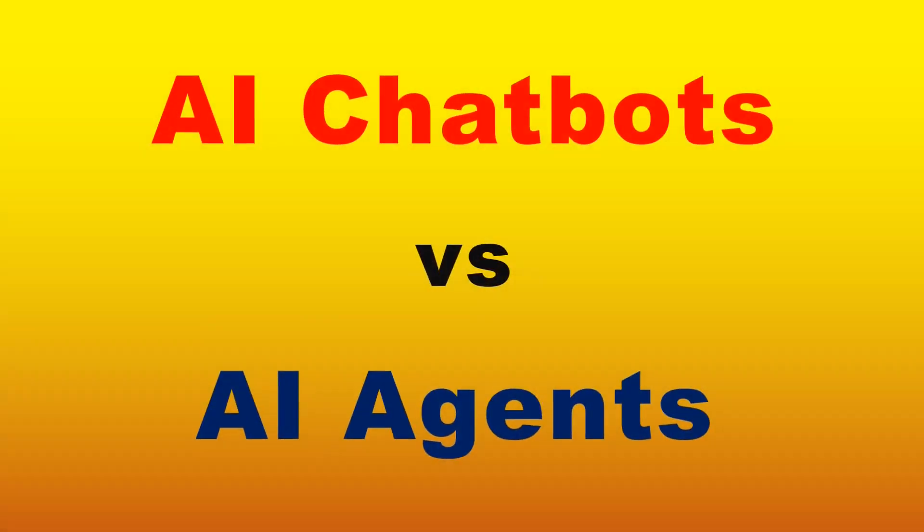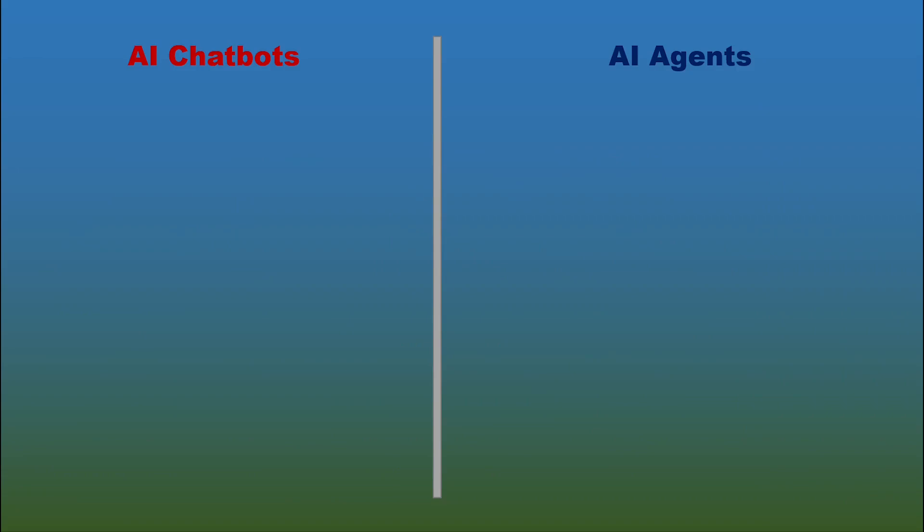Hi, in this short video we will explain the difference between AI agents and AI chatbots. An AI chatbot is much like a rule-based virtual assistant, which can handle specific tasks and provide specific answers efficiently.